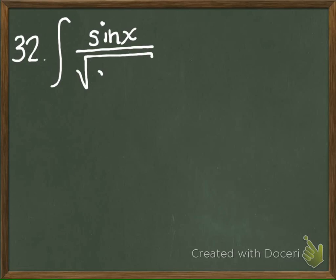We are going to do problem number 32. On number 32 we have sine of X over the square root of the cosine of X.